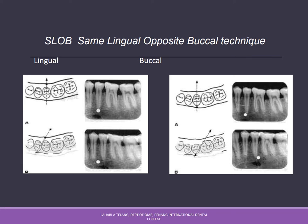Now consider a similar situation where the object is located buccally. Whether the object is on the lingual or buccal aspect of the arch, the initial radiograph looks very similar, so you cannot determine its position from a single image. Again, shift the cone mesially. In this second image, you notice the object of interest has moved in the opposite direction. By SLOB — same lingual, opposite buccal — this object is therefore located on the buccal side of the arch.